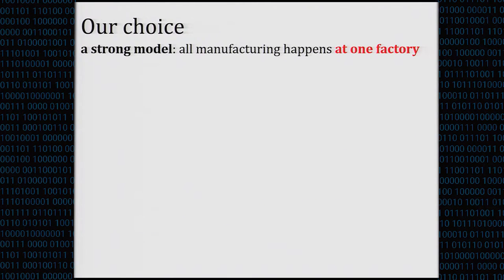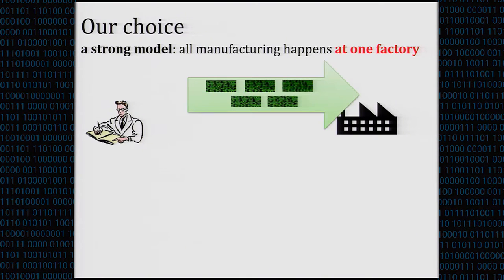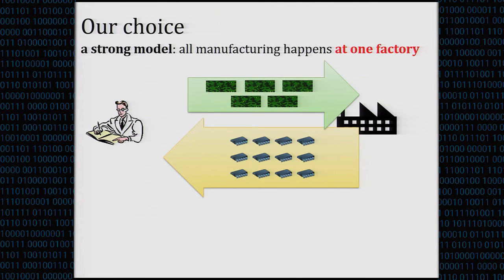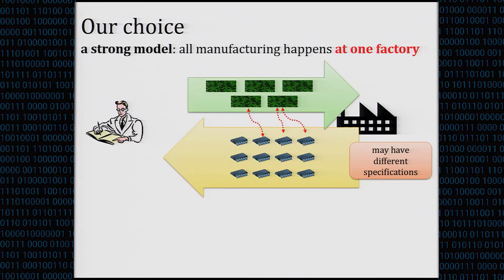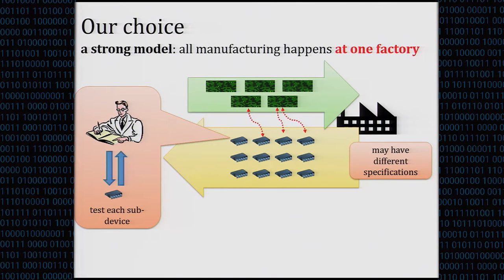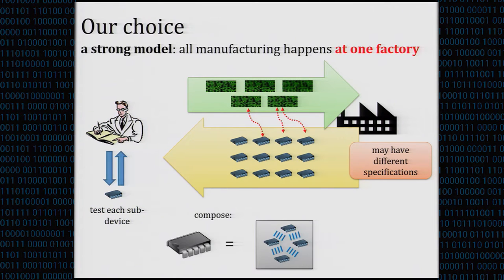Our model has a strong setting where all manufacturing can happen at one factory. You send descriptions of devices to the factory, get back sub-devices with different specifications, and then test each sub-device. We assume devices are deterministic and can be described as Boolean circuits — without big loss of generality since we can always generate randomness externally. We also assume there is an upper bound N on the number of times the device is used in real life.